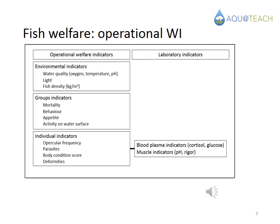Here's a general scheme of operational welfare indicators based on a recent publication by a Norwegian team led by Chris Noble in the Handbook of Welfare Indicators for Salmon. On the left we have environmental indicators, group indicators, and individual indicators, and on the right, laboratory indicators. Some of these we can use during our aquaponics project. Environmental indicators include oxygen and temperature; group indicators are usually observed visually from a distance; and individual indicators may involve handling the animal, removing it from the water, and sometimes dissection.